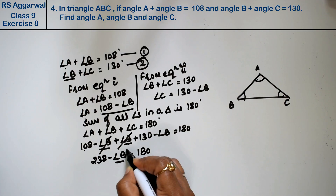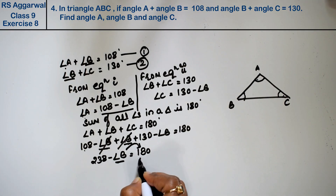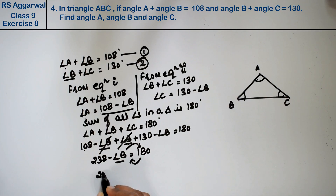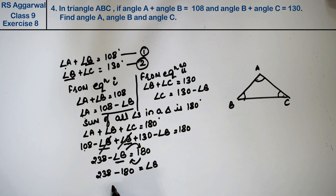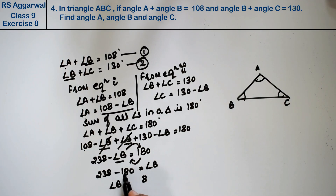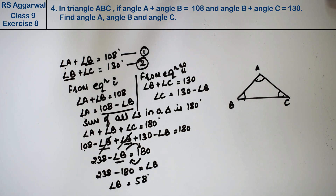Rearranging, angle B equals 238 minus 180, which gives us angle B equals 58 degrees.